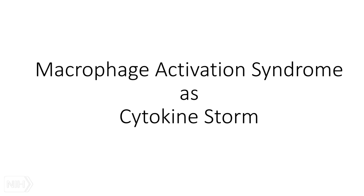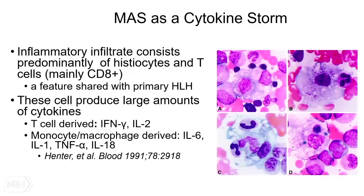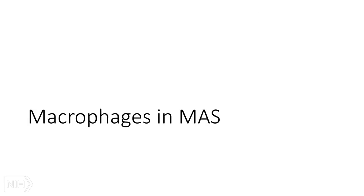In pediatric rheumatology, we view MAS as a cytokine storm. If you look at the inflammatory lesions in MAS — whether bone marrow, skin, lymph nodes, or essentially any part of the body — the inflammatory infiltrate consists almost exclusively of histiocytes and T cells. Among the T cells, there is a striking predominance of cytotoxic CD8-positive cells, a very important feature shared with primary HLH. All these cells produce massive amounts of cytokines.